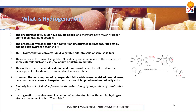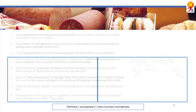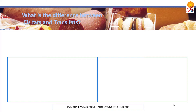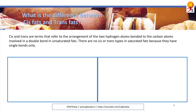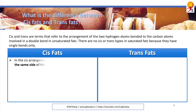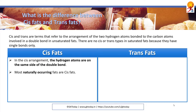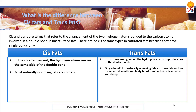Hydrogenation may also result in creation of unsaturated fats with a peculiar hydrogen atom arrangement called trans fats. What is the difference between cis fats and trans fats? Cis and trans are terms that refer to the arrangement of two hydrogen atoms bonded to the carbon atoms involved in a double bond in unsaturated fats. Saturated fats don't have this concept because they only have single bonds. In cis arrangement, the hydrogen atoms are on the same side of the double bond, and these are the most naturally occurring fats. In trans arrangement, the hydrogens are on the opposite side of the double bond. Only a handful of naturally occurring fats are trans fats, such as those found in milk and body fat of ruminants such as cattle and sheep.